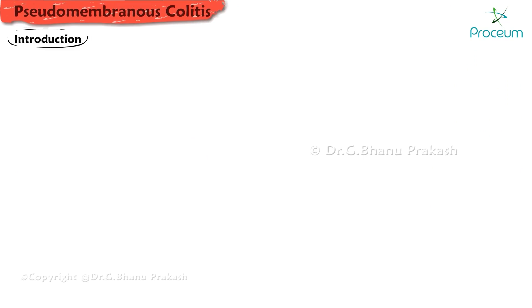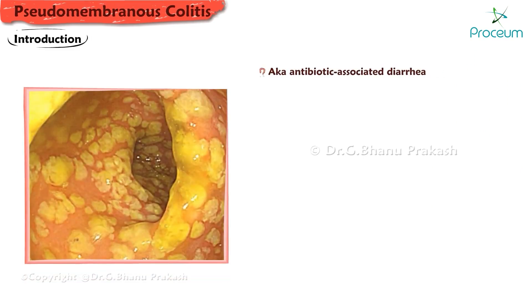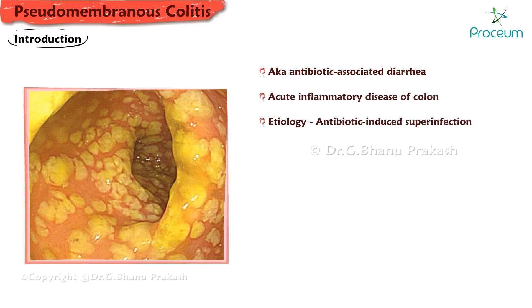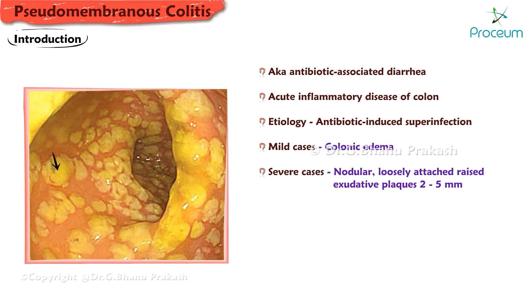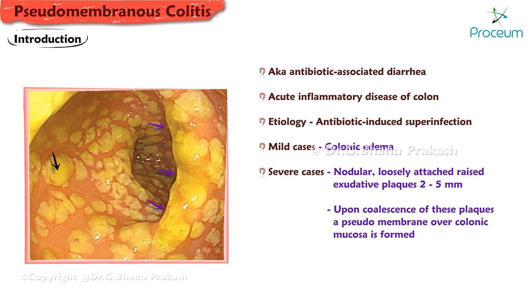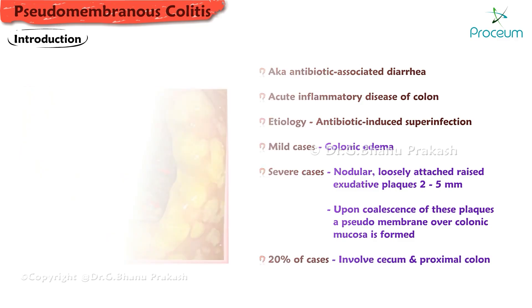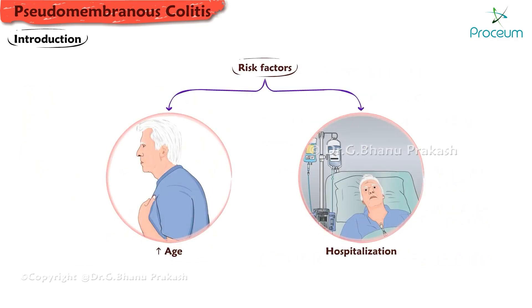Pseudomembranous colitis, also known as antibiotic-associated diarrhea, is an acute inflammatory disease of the colon caused by antibiotic-induced superinfection resulting in colonic edema in mild cases. In severe cases it can lead to the formation of nodular, loosely attached, raised exudative plaques 2 to 5 millimeters in size. Upon coalescence of these plaques, a pseudomembrane over colonic mucosa is formed, giving this condition its name. In approximately 20% of cases, involvement of the cecum and proximal colon occurs.